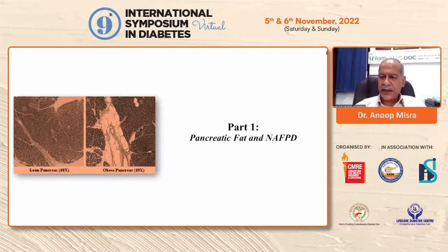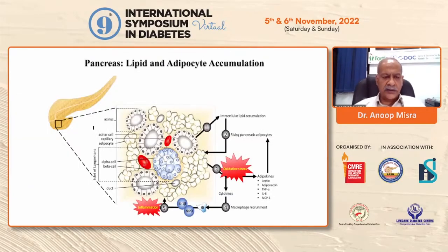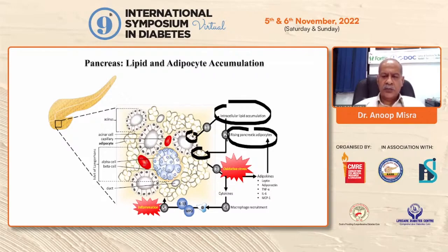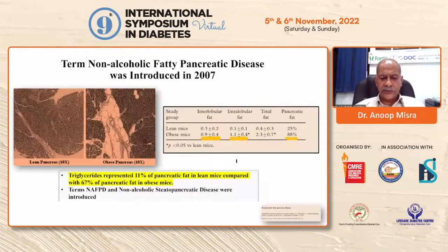Part one: pancreatic fat and non-alcoholic fatty pancreatic disease. This is the anatomical sketch of the pancreas. We are specifically interested in two types of tissues: intracellular lipid accumulation and pancreatic adipocytes. Both are important and both produce a cascade of events which ultimately lead to metabolic problems.